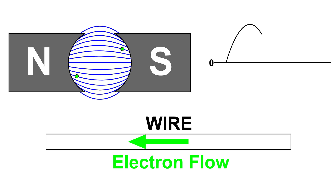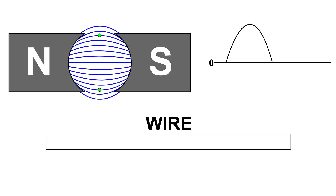The wire loop continues to rotate, but notice that the voltage isn't as high. If you take a look at the wire, there are electrons still flowing but not as much — and notice that it's still in the same direction. The wire loop continues to travel, getting less, and now we are at zero with no electron flow in the wire. At the peak, the wire loop had traveled 90 degrees. Now that we're back at zero, that wire loop has traveled 180 degrees.